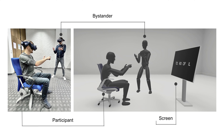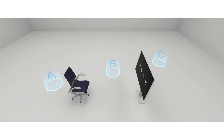Consequently, in the invisible-bystander condition, no bystander was visible in the VR view, and in the no-bystander condition, no bystander was visible in either view. To ensure that the bystander's movements did not differ between the invisible and visible-bystander conditions, they followed fixed routes between spots A, B, and C.